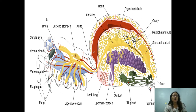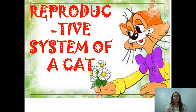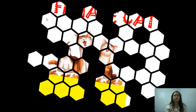The overall parts of the body of the mosquito include the intestine, the heart, the digestive tubule, the ovary, the tubules, the stomach, and the aorta. Just like the human and the frog, the mosquito also has a left ovary, right ovary, uterus, and oviduct.